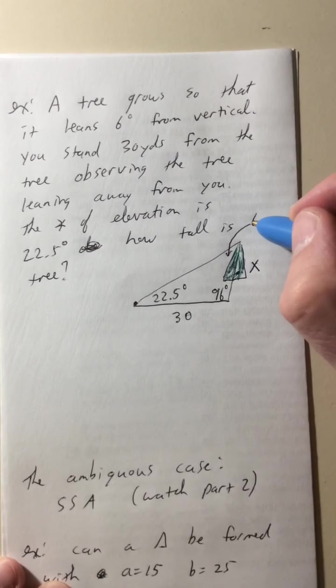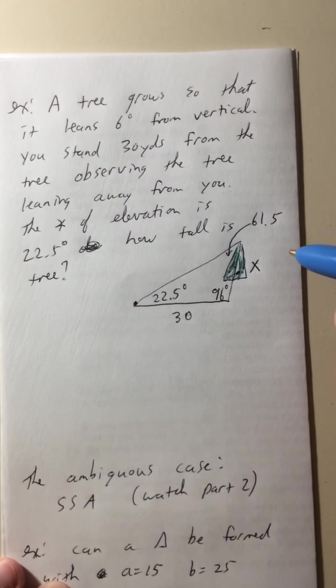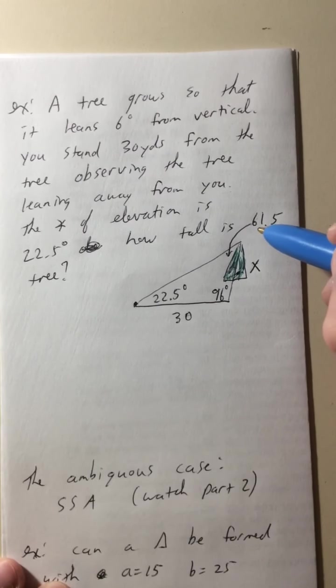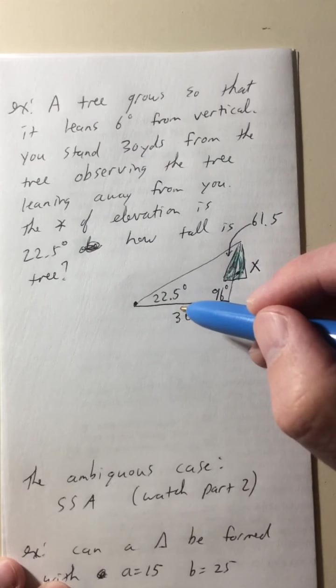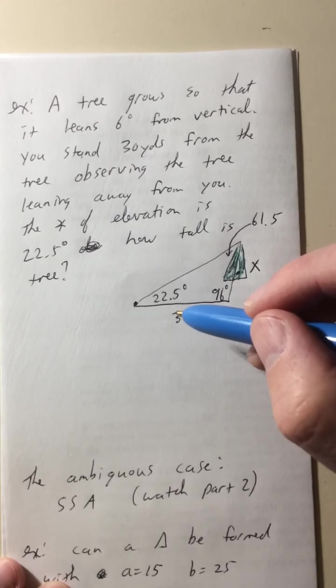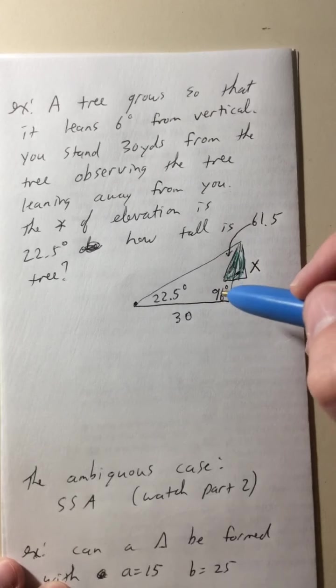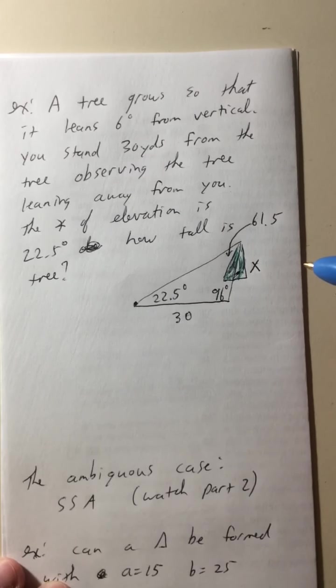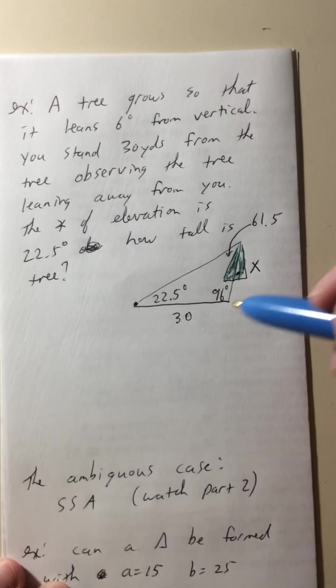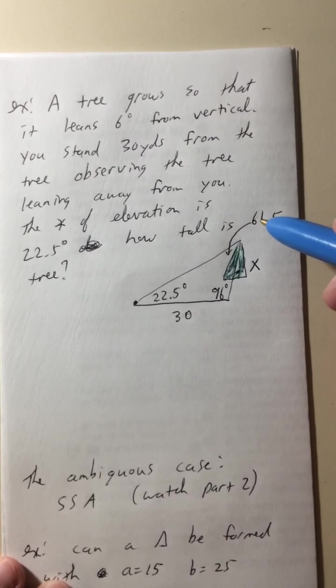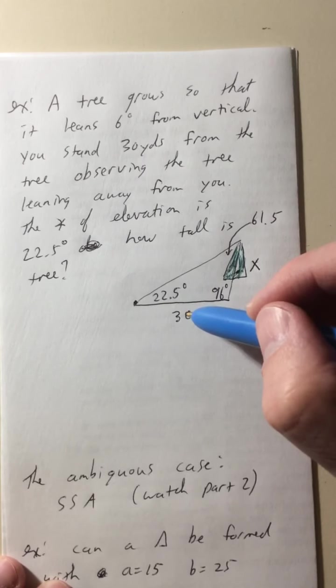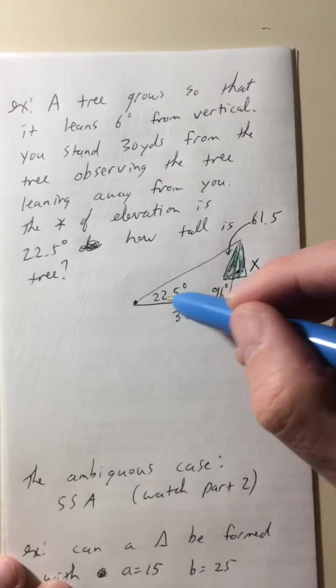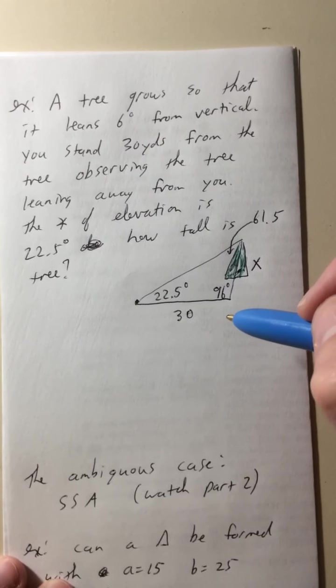So 96 and 22.5 is 118.5. And 180 minus 118.5 is 61.5 degrees. 61.5. So let me just make sure that's correct. So 61.5 and 22 is 83, 84 and 96. That makes 180. Good. So we're good. All right. So we got 61.5 degrees there. We got 30 yards there. We got 22.5 degrees. We got x there. So we just set it up.